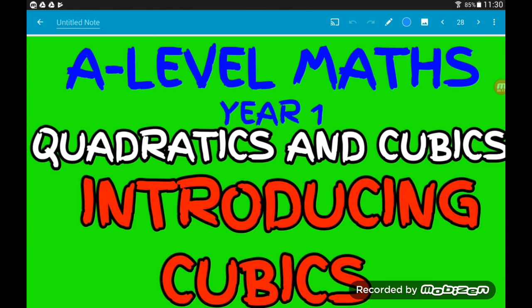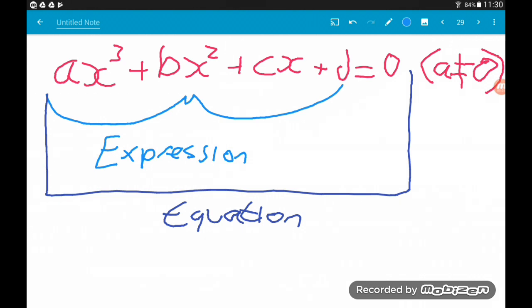Cubics are one step higher than a quadratic. Whereas with quadratics their highest power of x is a 2, with cubics our highest power of x now is a 3. So they are things of the form ax³ + bx² + cx + d.